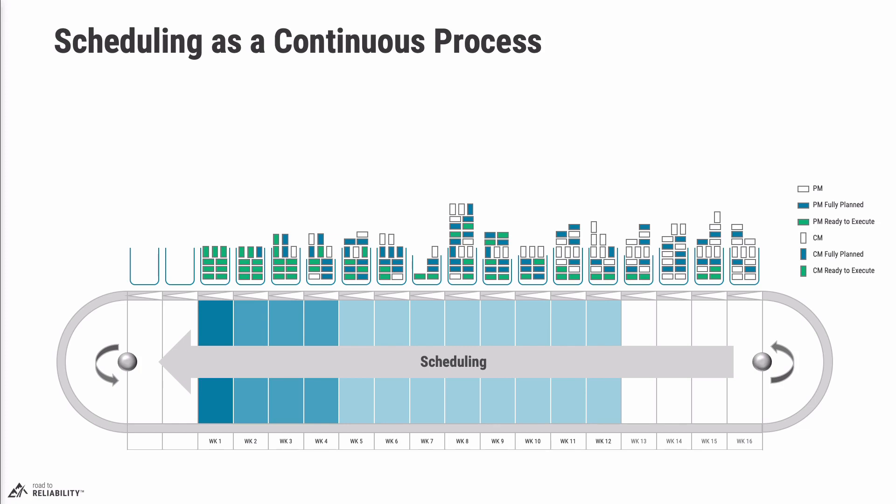One of the things we want to see on this conveyor belt is that we only want to see green blocks in the current week, and mostly green in next week — week 2 — and the week after. As you look further out, you'll see less and less green and more and more blue: less work is ready to execute and more work is fully planned but waiting on parts. Further out, most of the work is white, meaning it still needs to be planned.